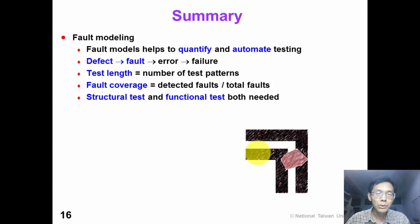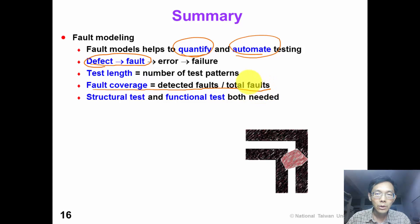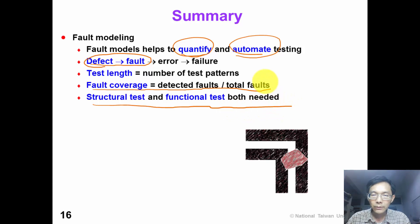In summary, in this video we have introduced fault modeling. Fault modeling helps to quantify the test and automate the test. Fault modeling means representing a defect at the abstracted logic level. The test length is the number of test patterns in the test set. Fault coverage is the number of detected faults over the number of total faults. Structural testing and functional testing are both needed for different reasons. Thank you for listening.